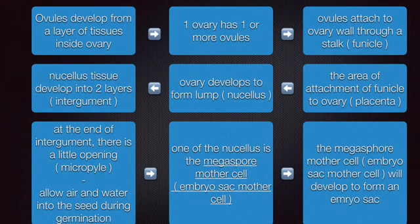Let's take a look at this flowchart. First, ovules develop from a layer of tissues inside ovaries. The ovaries have one or more ovules each. The ovules attach to the ovary wall through a funicle. The area of attachment of the funicle to the ovary is called the placenta.